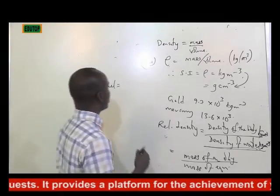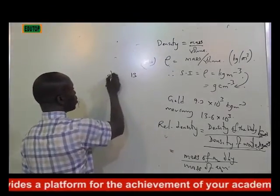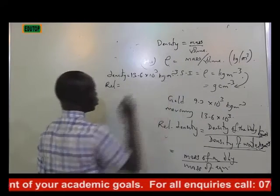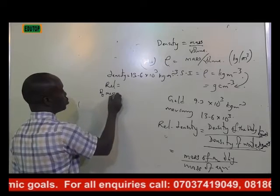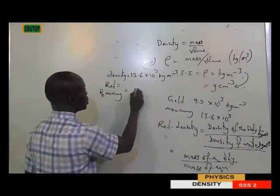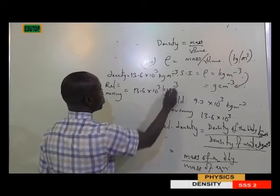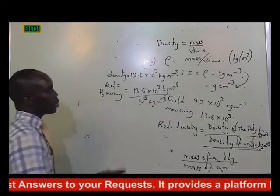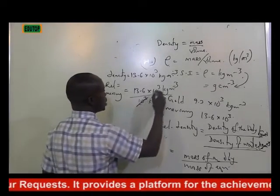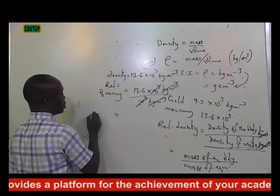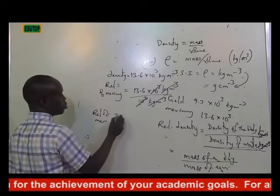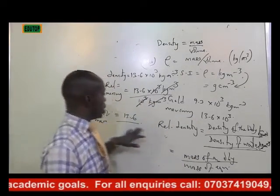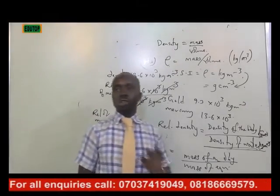How do we prove this? Let's look at the relative density of mercury. The normal density of mercury from our chart is 13.6 × 10³ kilogram per meter cube. So if you are looking for relative density of mercury, you take density of mercury — 13.6 × 10³ kg/m³ — divided by density of water — 1 × 10³ kg/m³. The two units cancel out. So the relative density of mercury is 13.6, no units. In any exam, every relative density value you get does not have any unit.